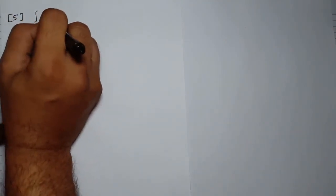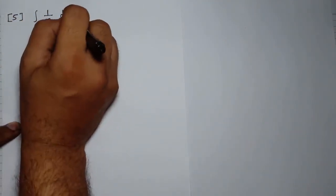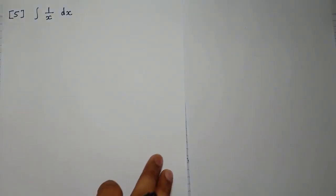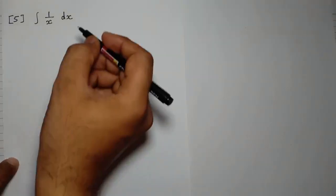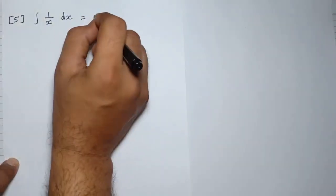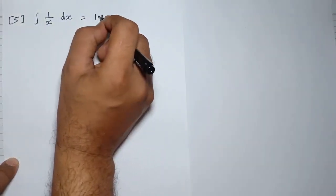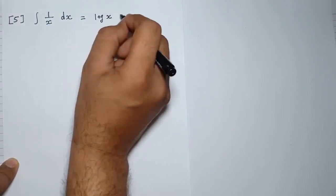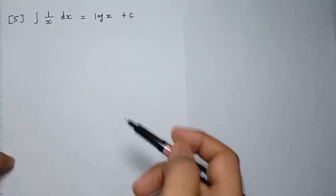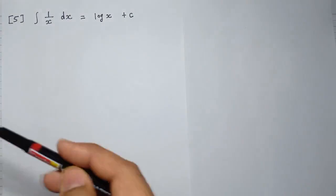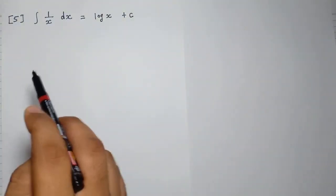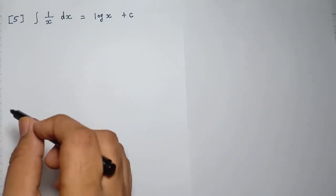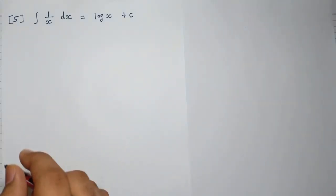Rule number 5: when integration of 1 divided by x is given. So, what will be the integration of 1 divided by x? Remember, when 1 divided by x is given, rule number 5 says its integration is log x plus c. So, integration of 1 divided by x will be log x.